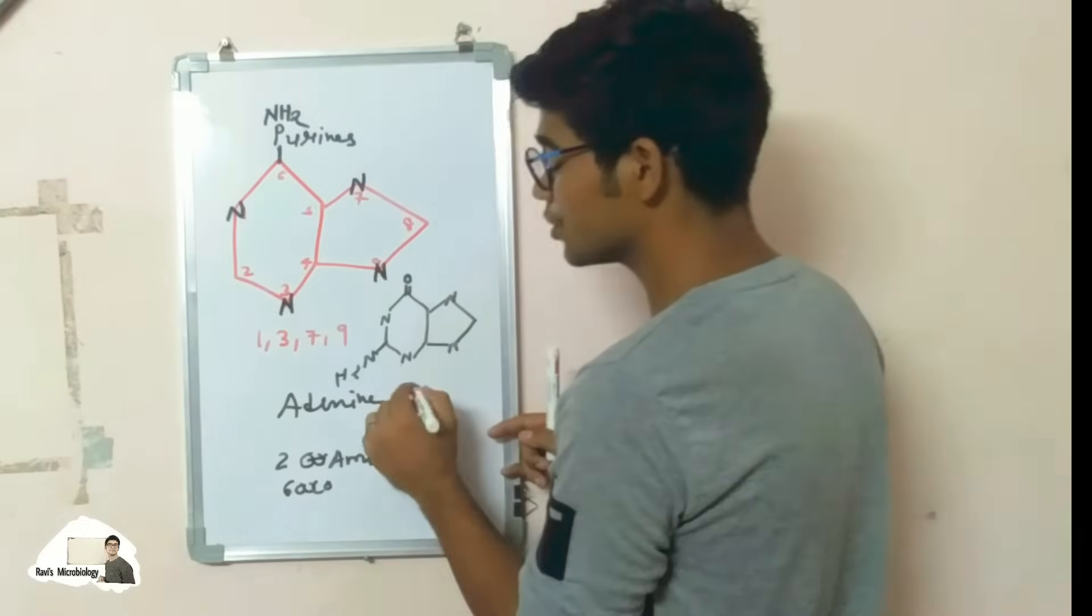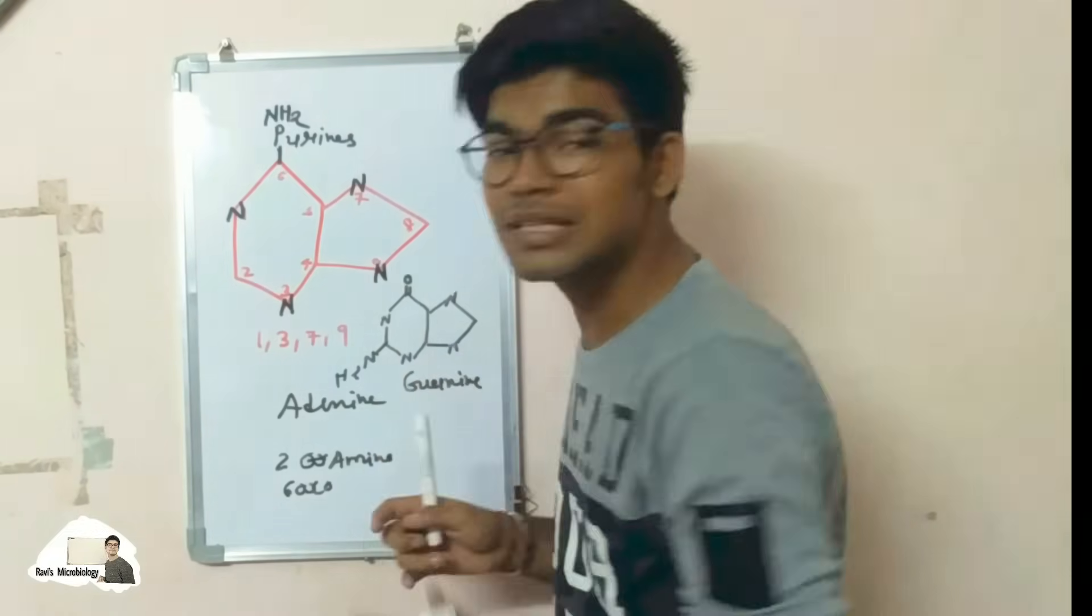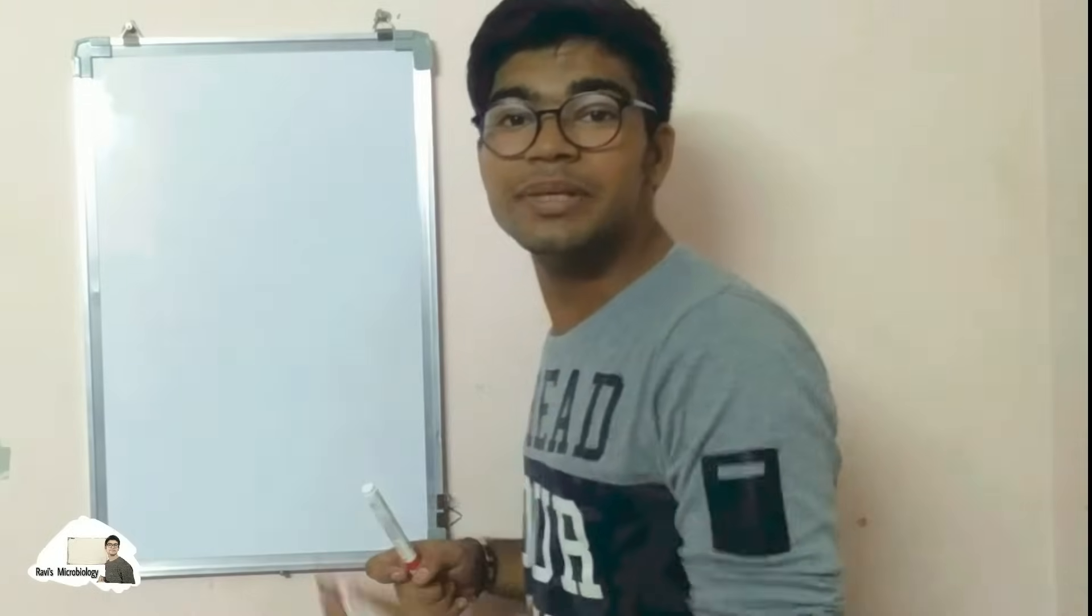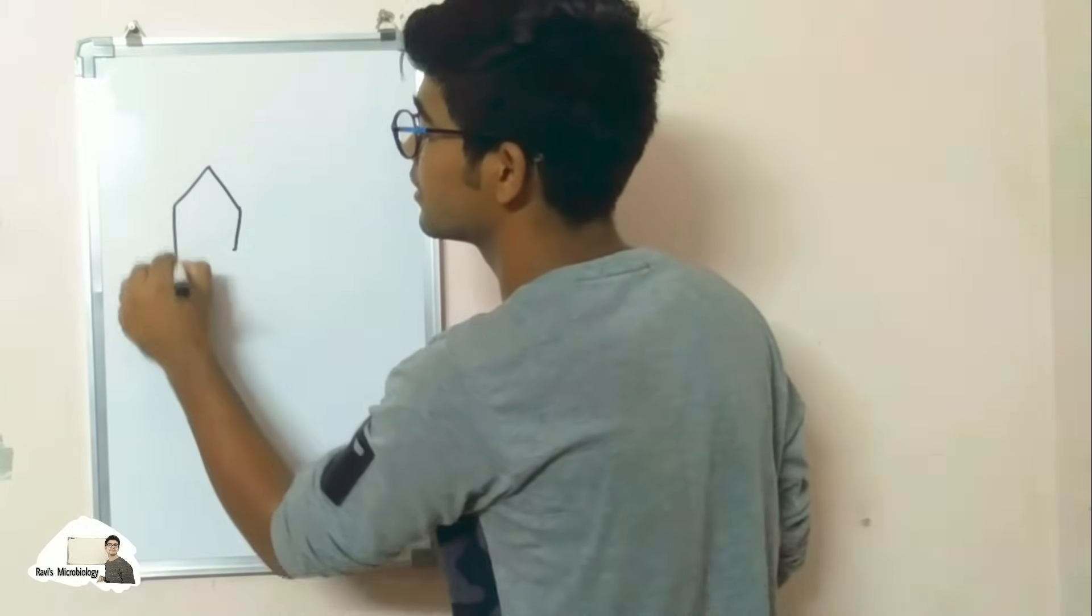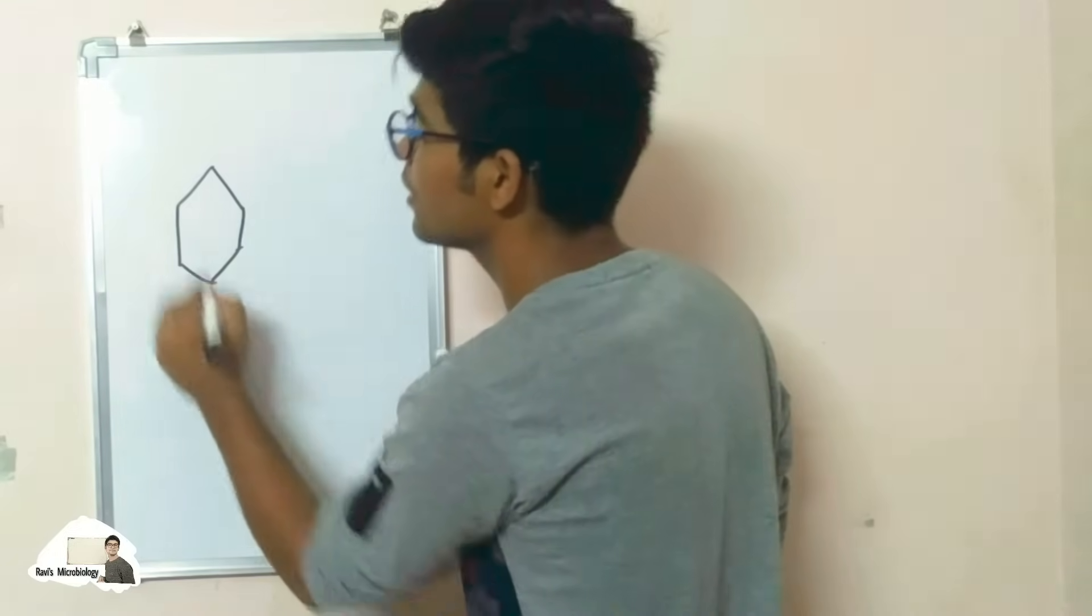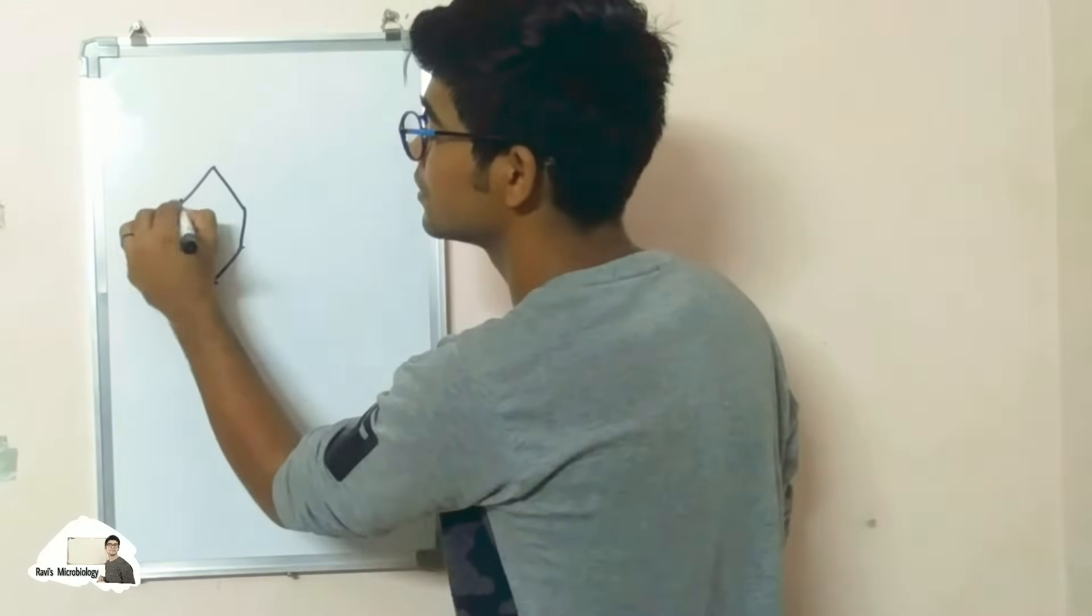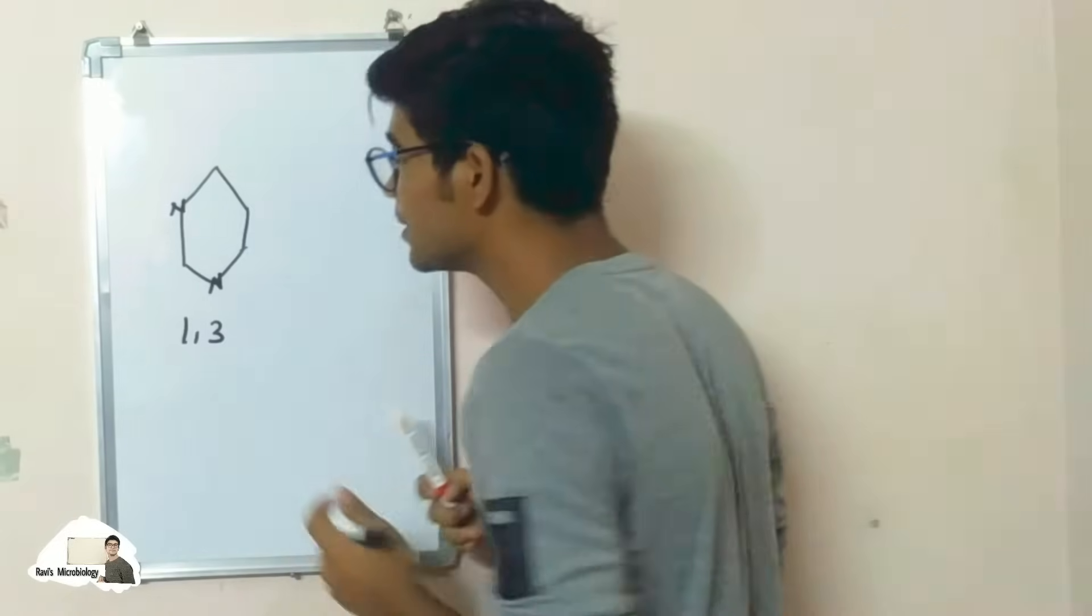It forms one. So these are the purine bases. Pyrimidine ring contains a six-member aromatic ring. So in this ring, place nitrogen at one and three positions.